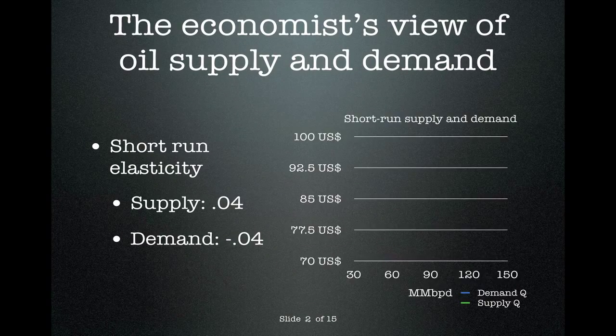This is the traditional economic view of the short-run supply and demand in the oil market. As supply shifts to the left — for example from a supply disruption like terrorists blowing up a pipeline — the price will increase slightly and the demand will shift to create a new equilibrium. Likewise, if the demand shifts out to the right, perhaps as we move into the summer driving season, price will increase and supply will shift to meet it at the new equilibrium.